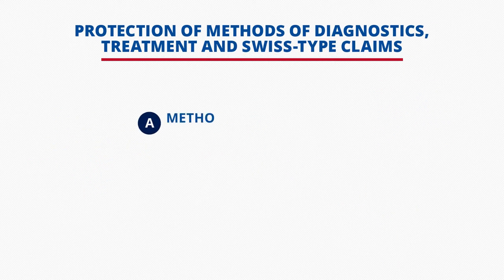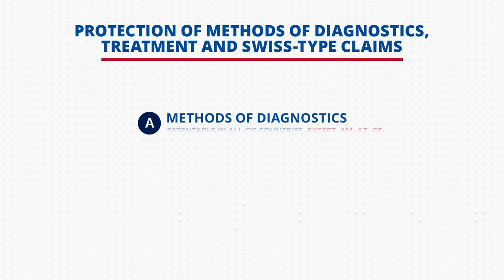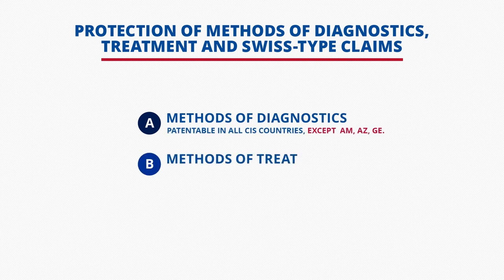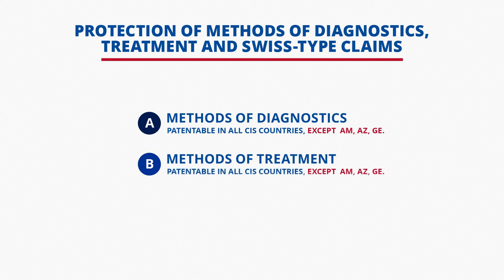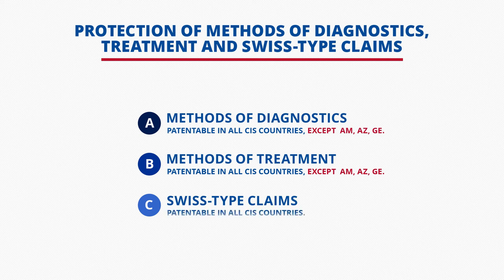The following are patentable items: methods of diagnosing diseases; surgical and therapeutic methods for treating human and animal bodies; Swiss-type claims — the type of claim targeted to protect the use of an invention. To this type of claim also applies claims known as the Swiss type and use type.